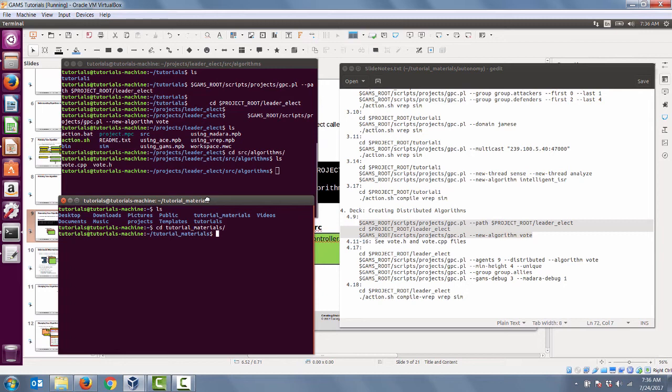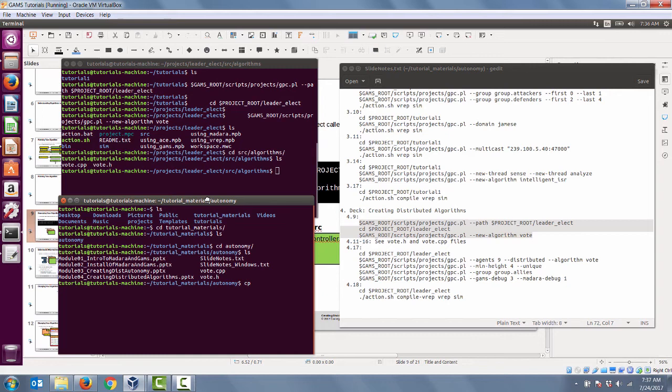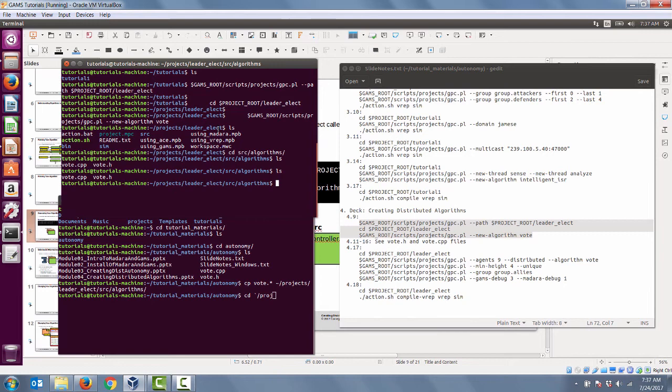We're going to copy vote.star and source it into the project's leader elect source algorithms directory that we created through the GPC.pl command. You can check your file by looking inside and looking for comments like 'added from slide 12 creating distributed algorithms' to tell that this is actually the vote.h that is included in the tutorial materials.